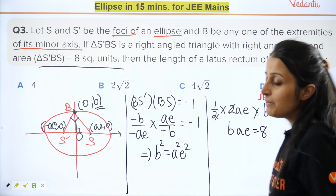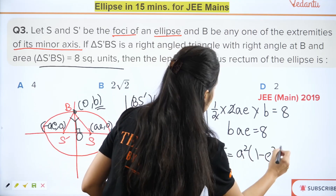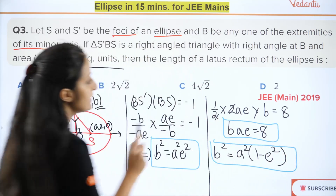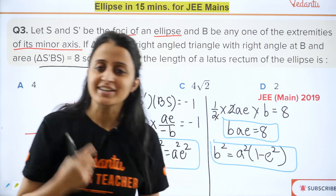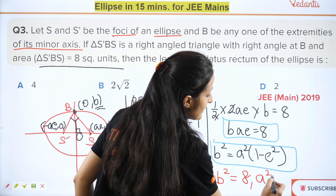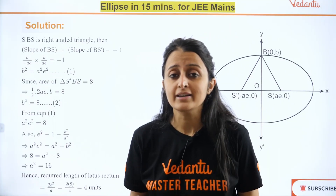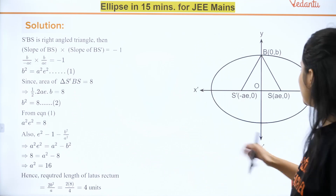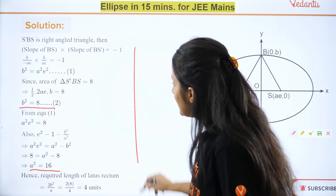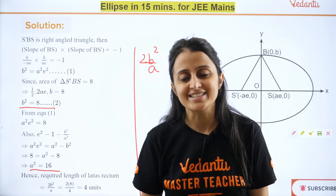Additional information: the area of triangle S'BS is 8 square units. Area = ½ × SS' × BO = ½ × 2ae × b = 8, so b·ae = 8. Using the three conditions together, you can solve to get b² = 8 and a² = 16. Length of latus rectum = 2b²/a = 2(8)/4 = 4 units. The full solution is available for reference.